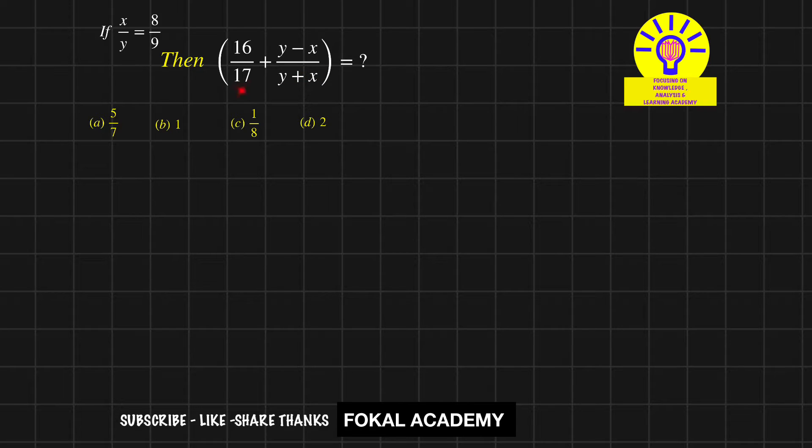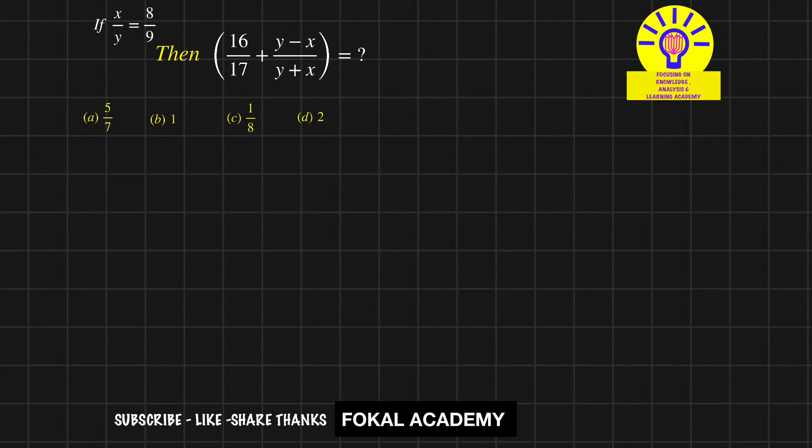First of all, observe carefully. I am taking y common in the numerator and denominator. So 16 by 17 plus, now bring y common in the numerator and it becomes y into (1 minus x by y). Similarly, y common on the denominator, it is y into (1 plus x by y).